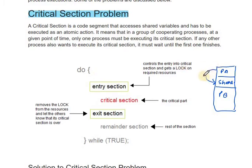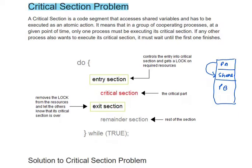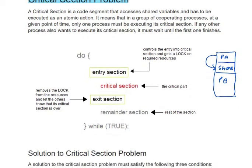At any given time, only one process executes its critical section. If any other process wants to execute its critical section, it must wait until the first one finishes. Here is an outline of the critical section code structure.